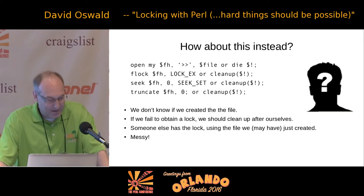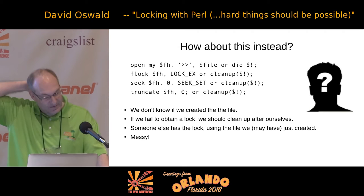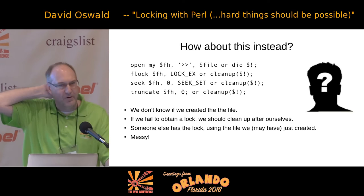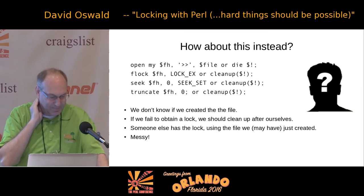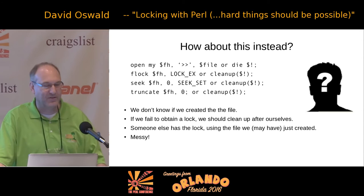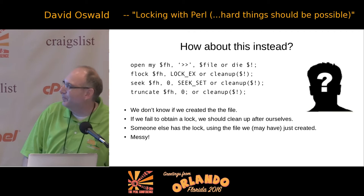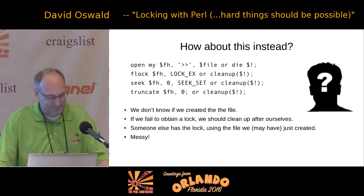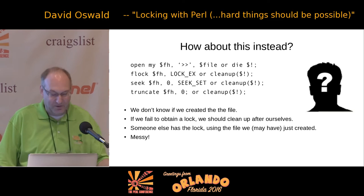How about this instead: open in append mode, then obtain a lock, then seek to the beginning of the file, then truncate. That's quite similar — we can create a file, open it, and if we get the lock, seek to the beginning and clobber the file. But we still don't know if we created the file — append mode could have created it. If we have a failure at any point, do we clean up the file we just created? There's still plenty of time between open and flock for somebody else to have created the file out from under us.